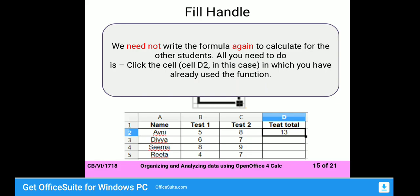Next is Fill Handle. Fill Handle is used to fill data automatically. When you select any cell, at the bottom-right corner there is a small black square icon. Click on that black square icon and drag it to the range where you want to fill your data, and it will fill the data according to the selected cell.